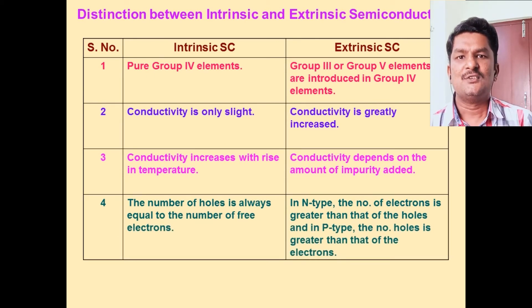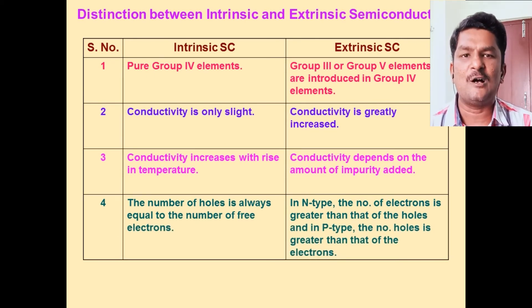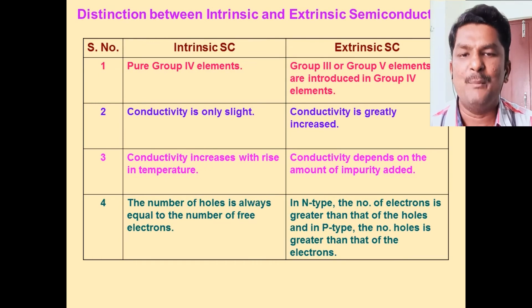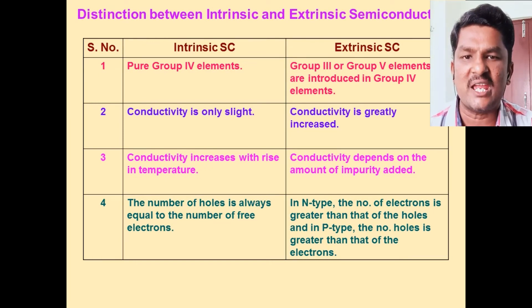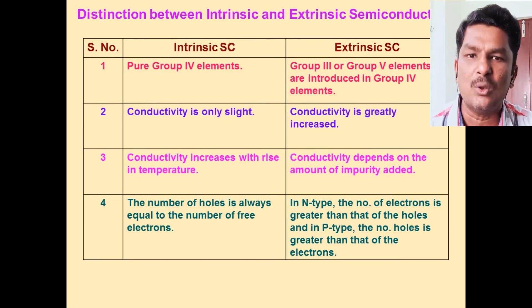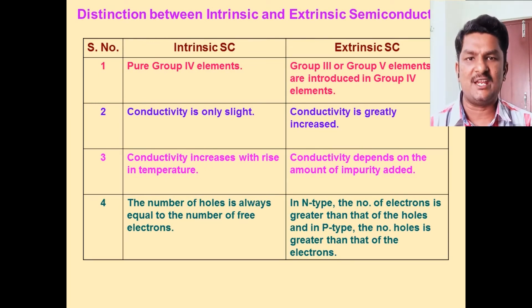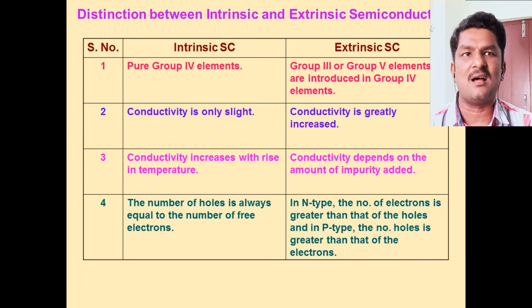The hole is associated with a positive charge moving from one position to another. This is called a P-type semiconductor. The acceptor impurity produces an energy level just above the valence band, called the acceptor energy level. In a P-type semiconductor, the majority charge carriers are holes and the minority charge carriers are electrons.